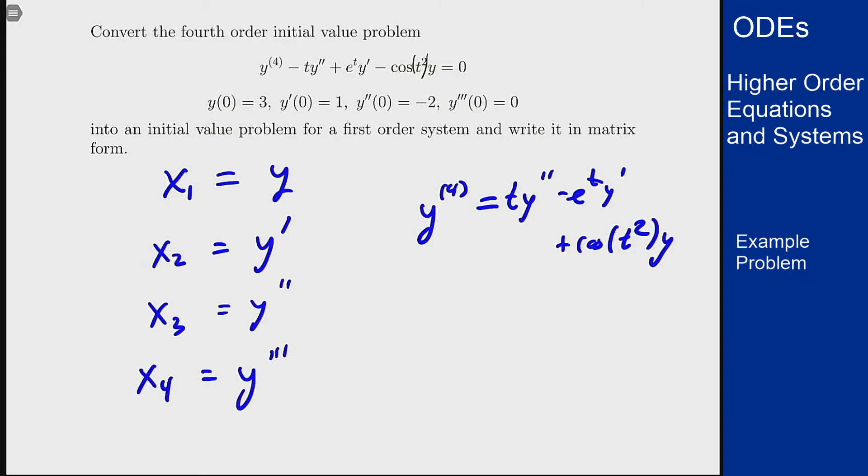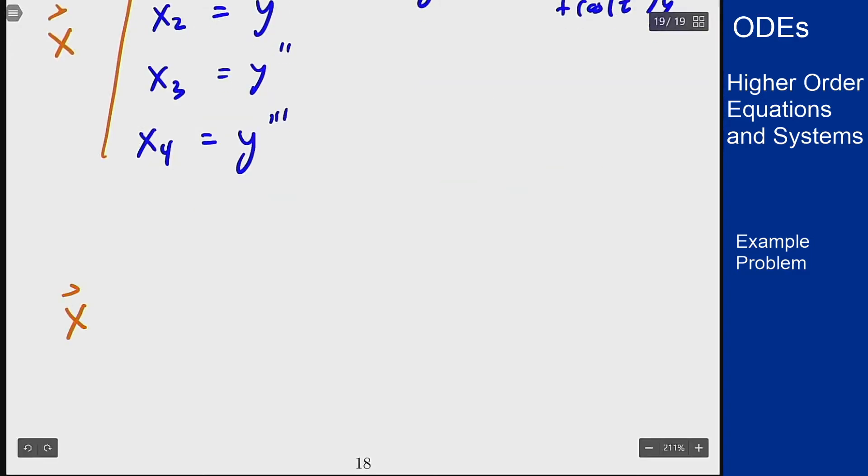And we can see that we start taking derivatives. So this is going to be my vector x here. I want to figure out what is x prime. Well then x prime is going to be x1 prime, x2 prime, x3 prime, and x4 prime. That is what it means for it to be x prime.